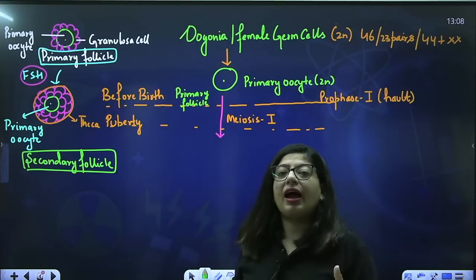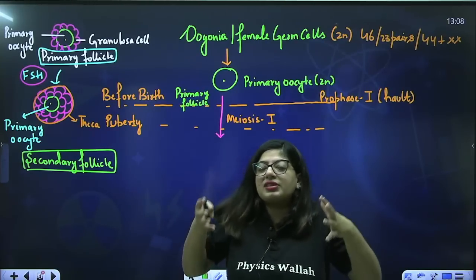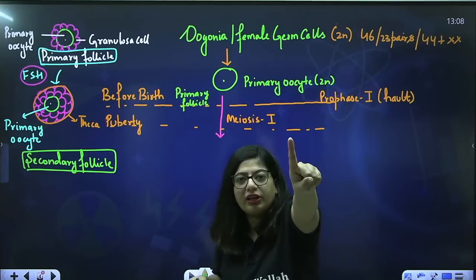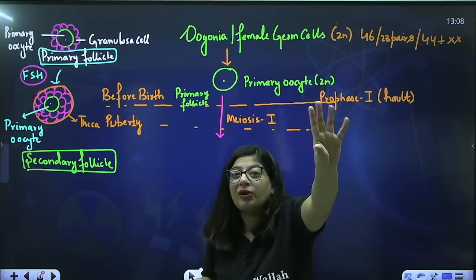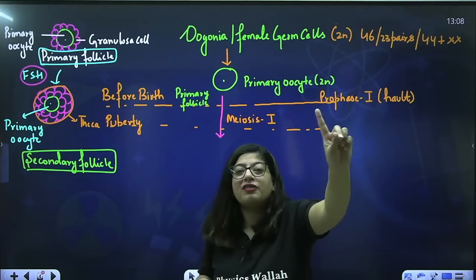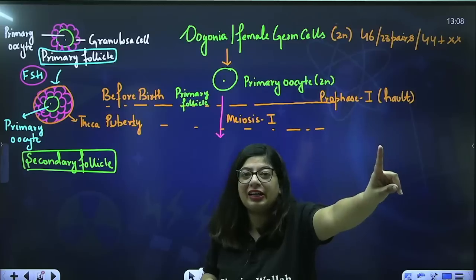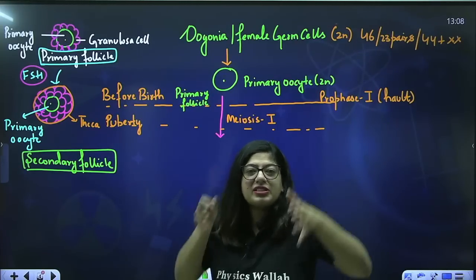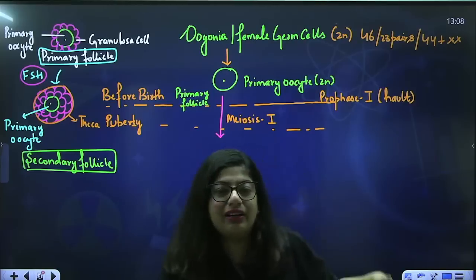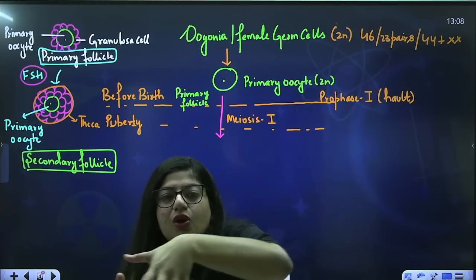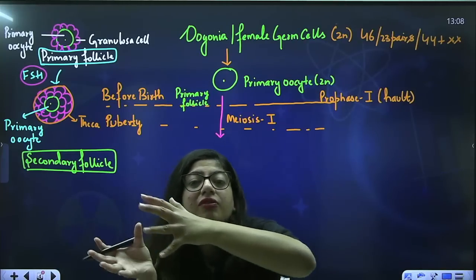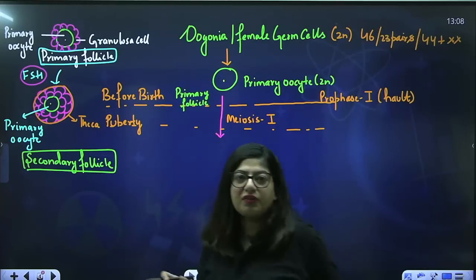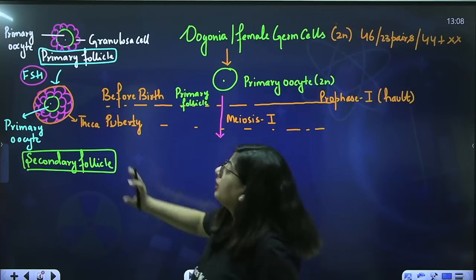When I hit puberty, my hormone levels rise. At that time, one primary follicle — not all — just one of those follicles will be selected and converted into a secondary follicle. That means one lucky follicle is selected and is on the verge of becoming an ovum.